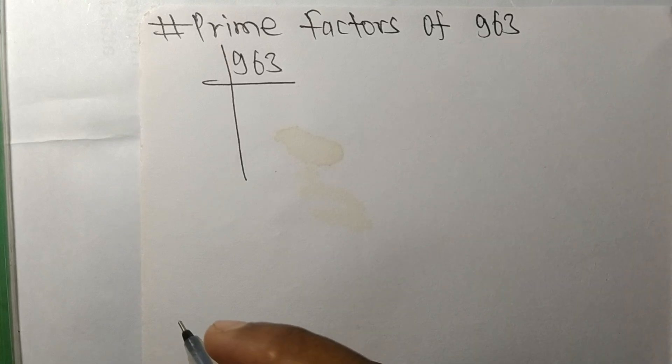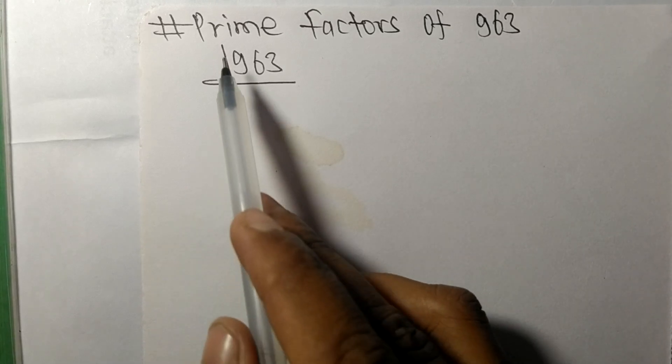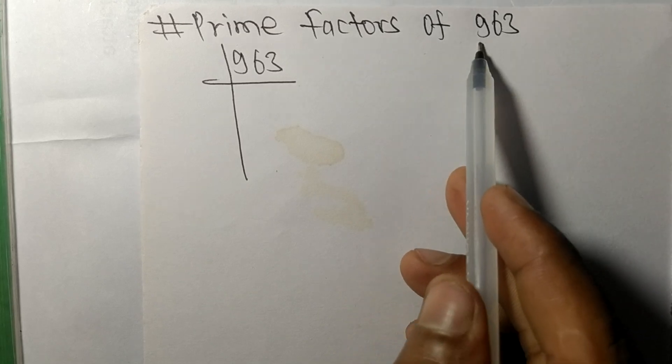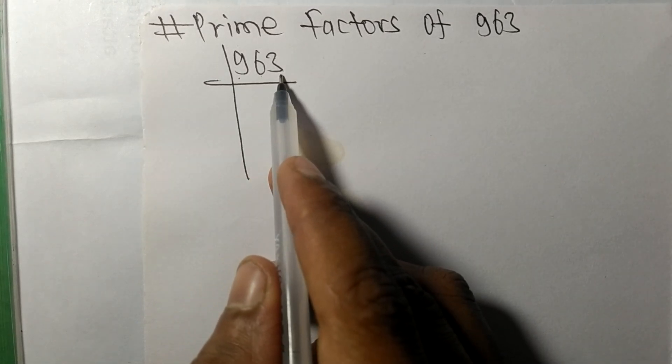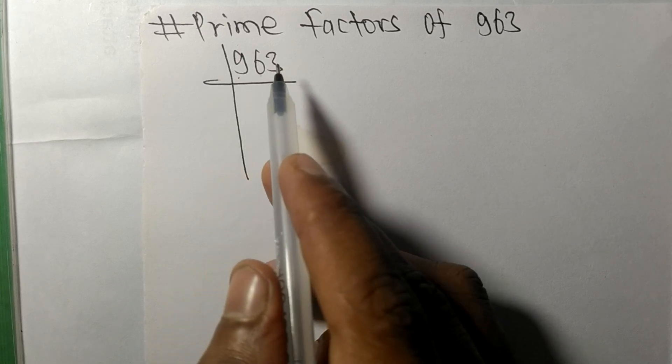Today in this video we shall learn to find the prime factors of 963. 963 is exactly divisible